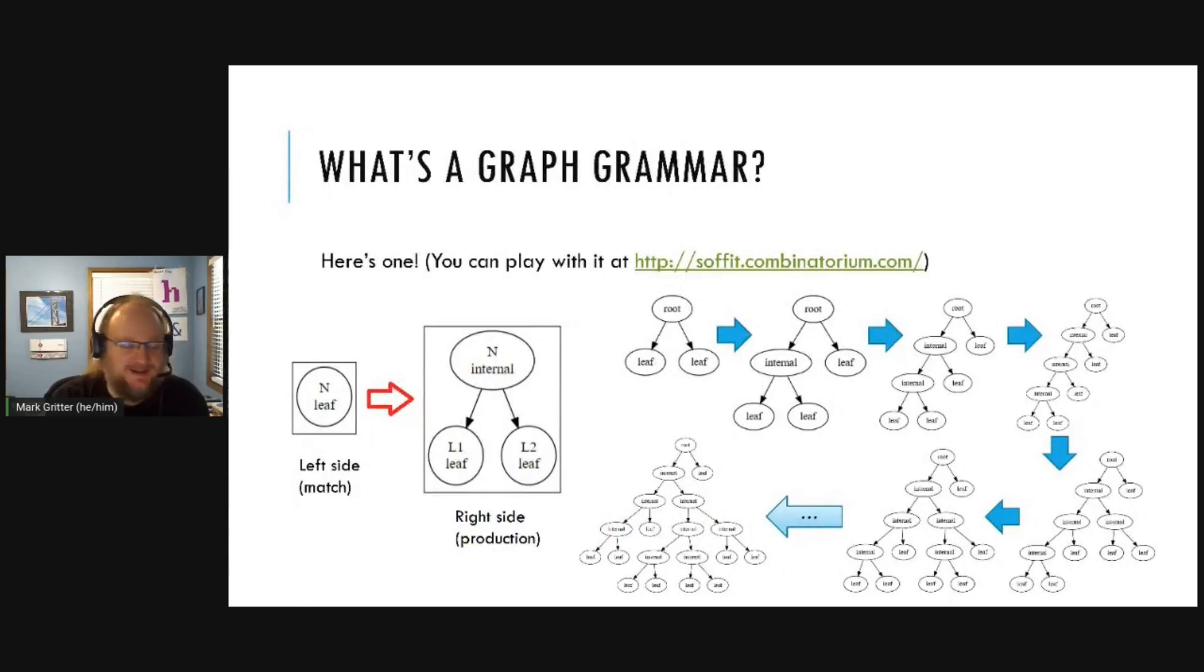So, what's a graph grammar? Here's one, and you can play with it online at soffit.combinatorium.com. Apologize for the hard-to-remember domain name. It's a rule that applies to graphs. On the left-hand side, we've got something about a match, a node named leaf, and on the right-hand side is the production, what we're going to do with it. In this example, we're creating a binary tree by replacing a leaf by another node, and we can do it again and again and again.